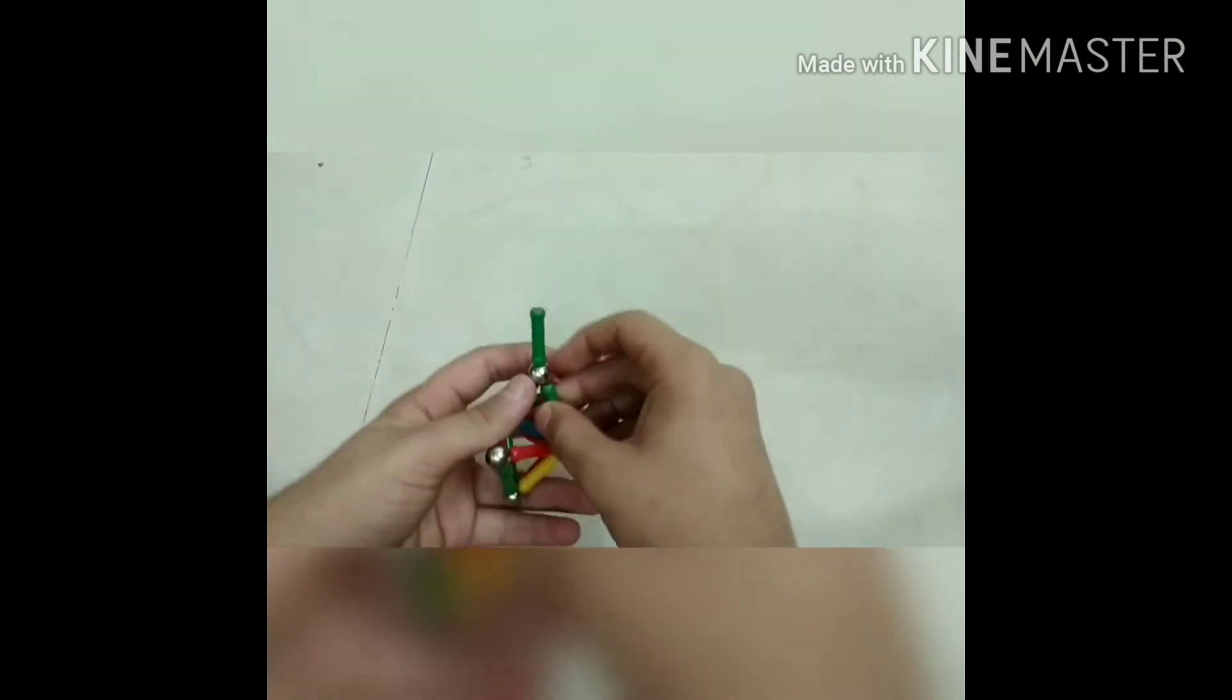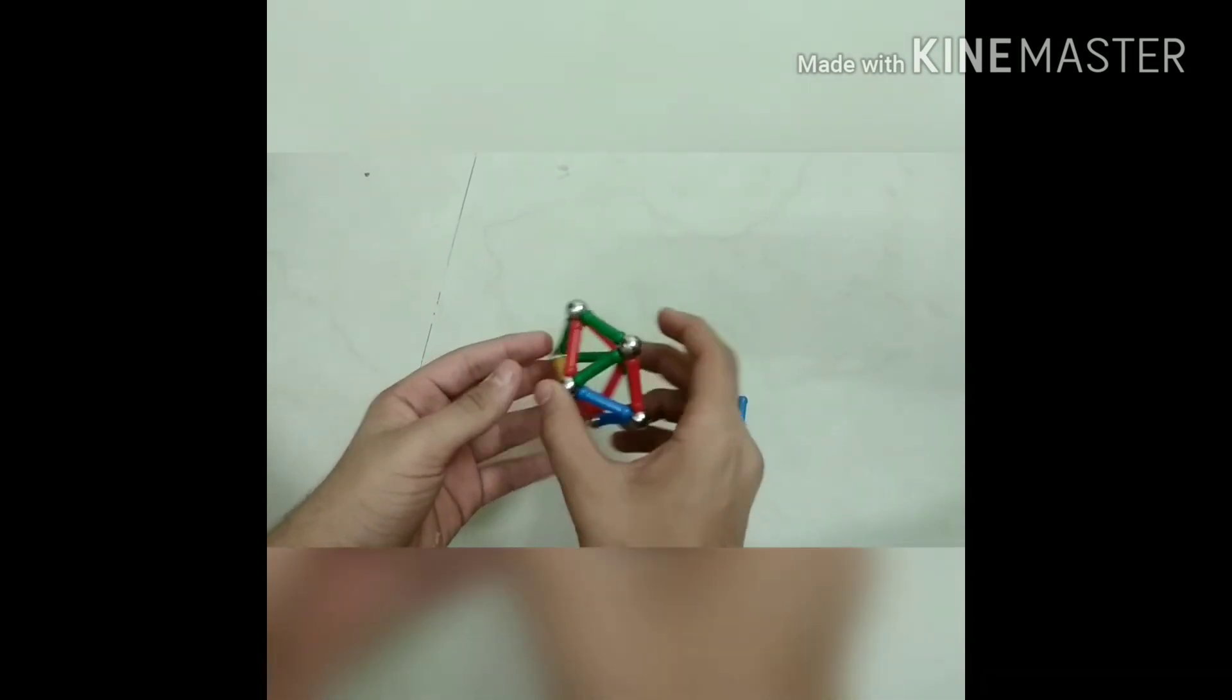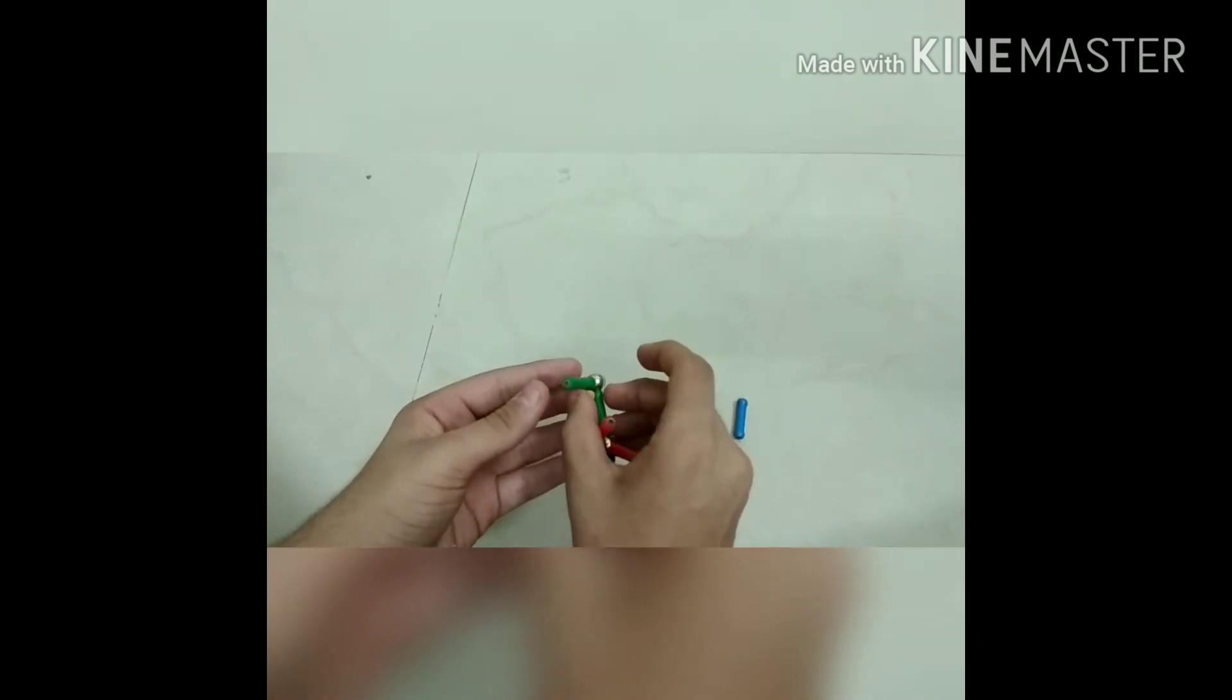So once we remove the magnetic stick and connect the remaining magnetic sticks and balls, we can see that the 3D pentagon becomes less stable and with 1 flick it breaks.